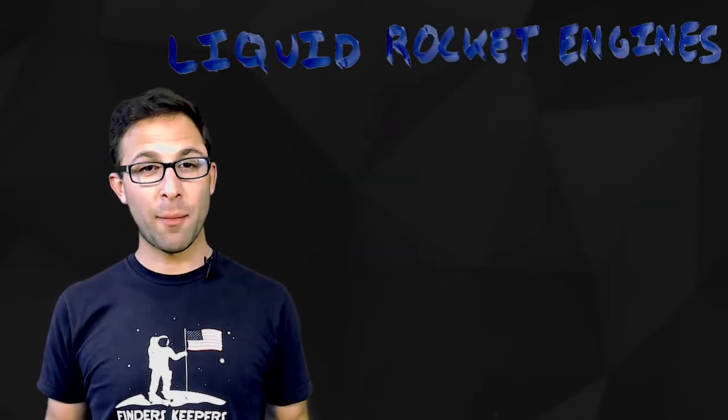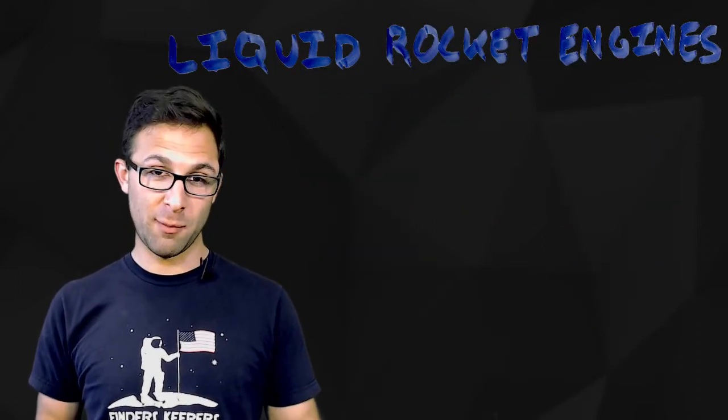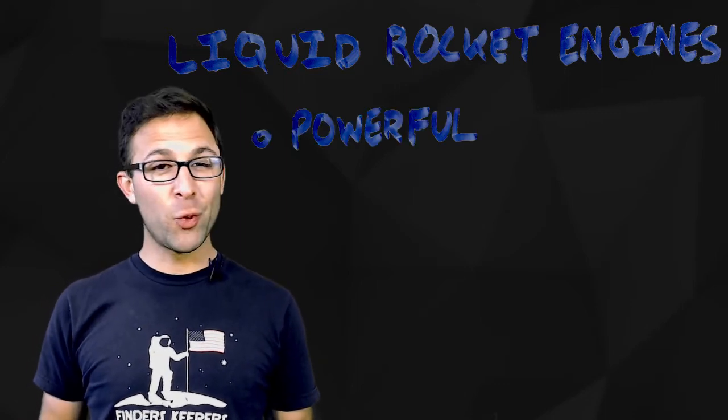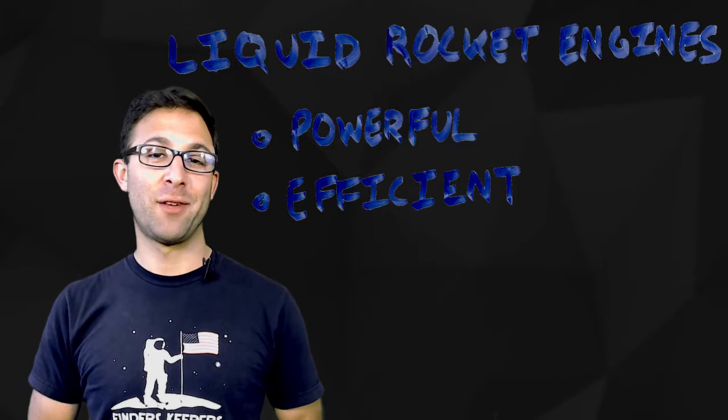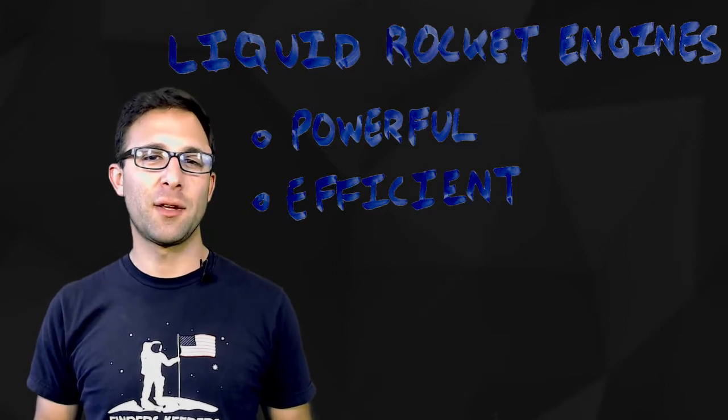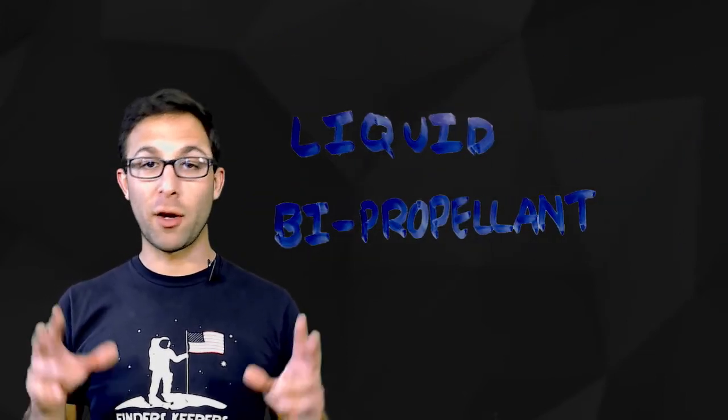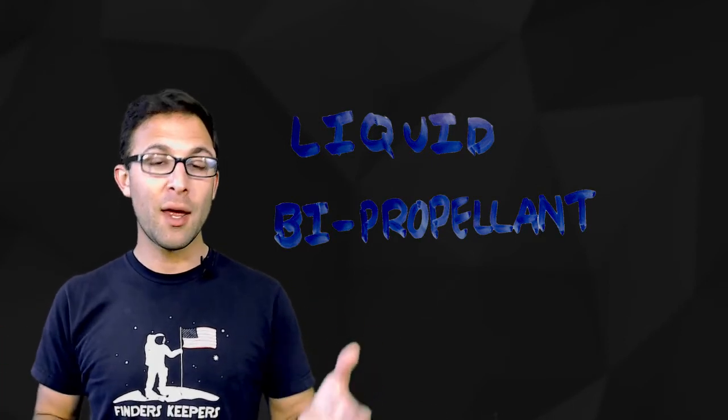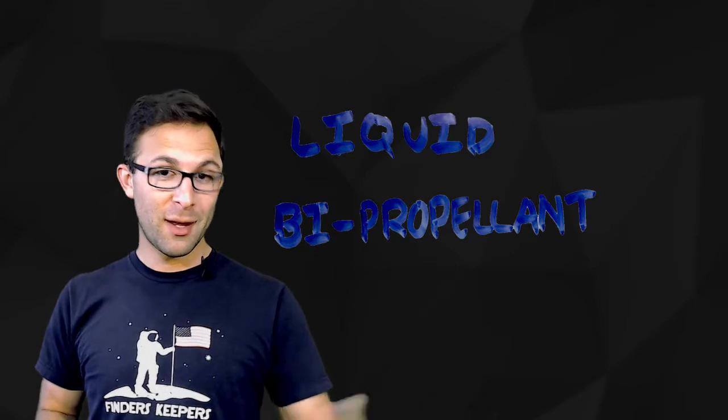Liquid rocket engines. Pretty common, especially for launch vehicles. Liquid rocket engines are really powerful, really efficient. They get the job done really well. What you need for a liquid bi-propellant engine is two propellants: an oxidizer and a fuel.